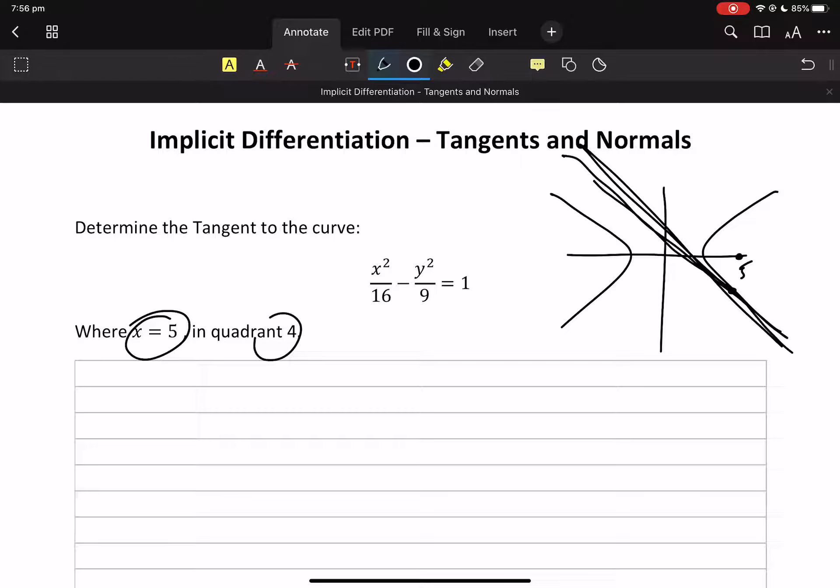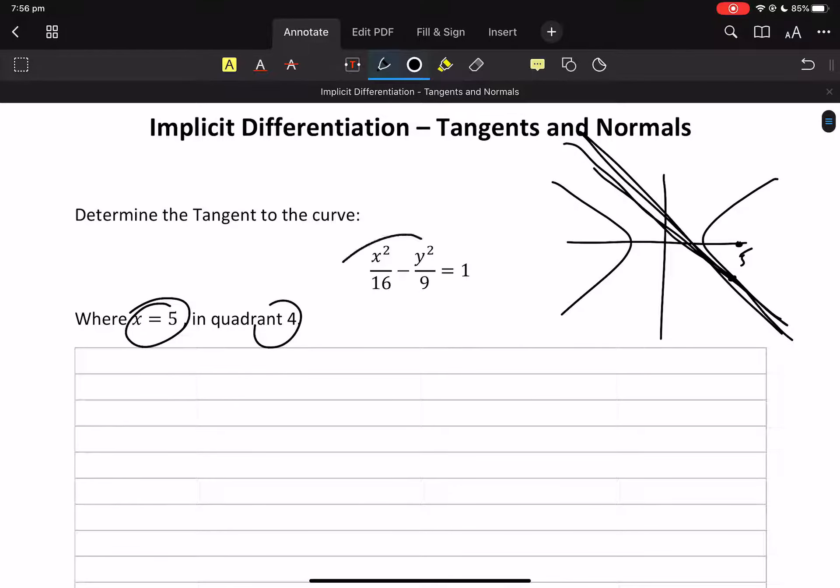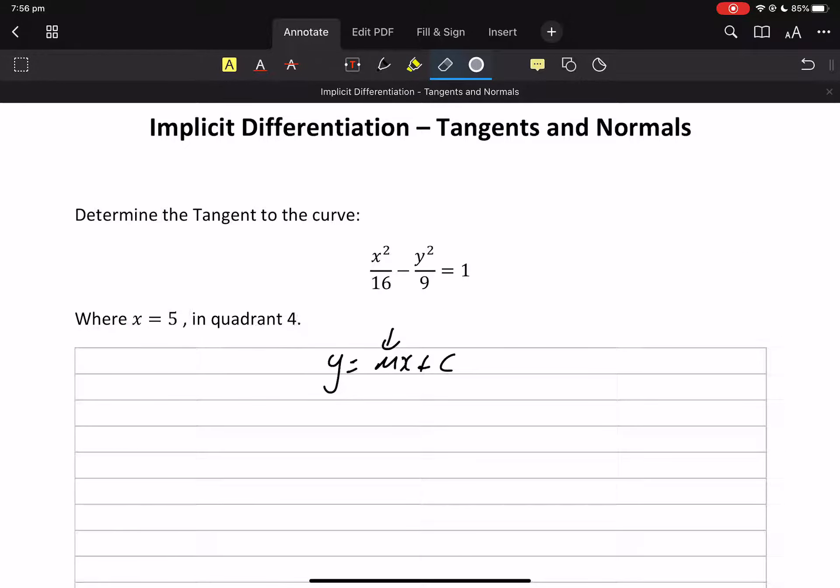There's our tangent there. You're not to know that and you don't really care. You don't need that. We need a gradient function because a tangent is in the form y equals mx plus c. We need to find that m. So let's get rid of this that we don't really know.